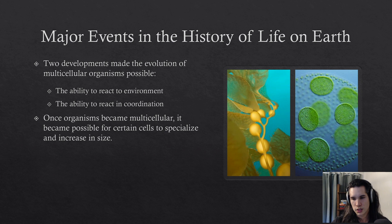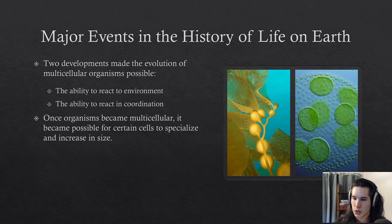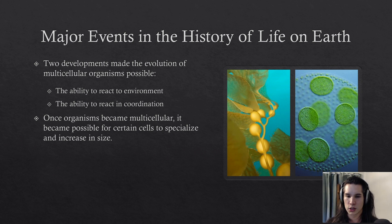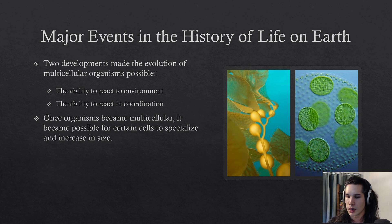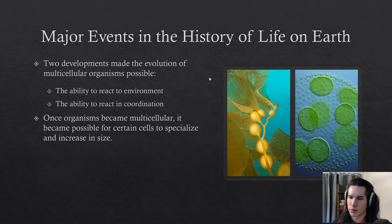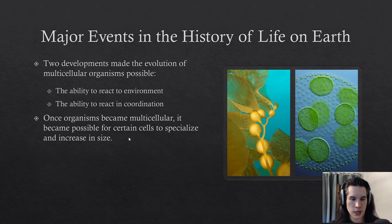A prime example is slime molds, which can exist as single cells but when they move close to other slime molds they create colonies with a better, more efficient movement ability. Researchers showed that the benefits of moving more efficiently with organisms of the same type outweighed the cons of having to share resources — that propelled single cells to form groups. Once organisms became multicellular, it became possible for certain cells to specialize and increase in size.